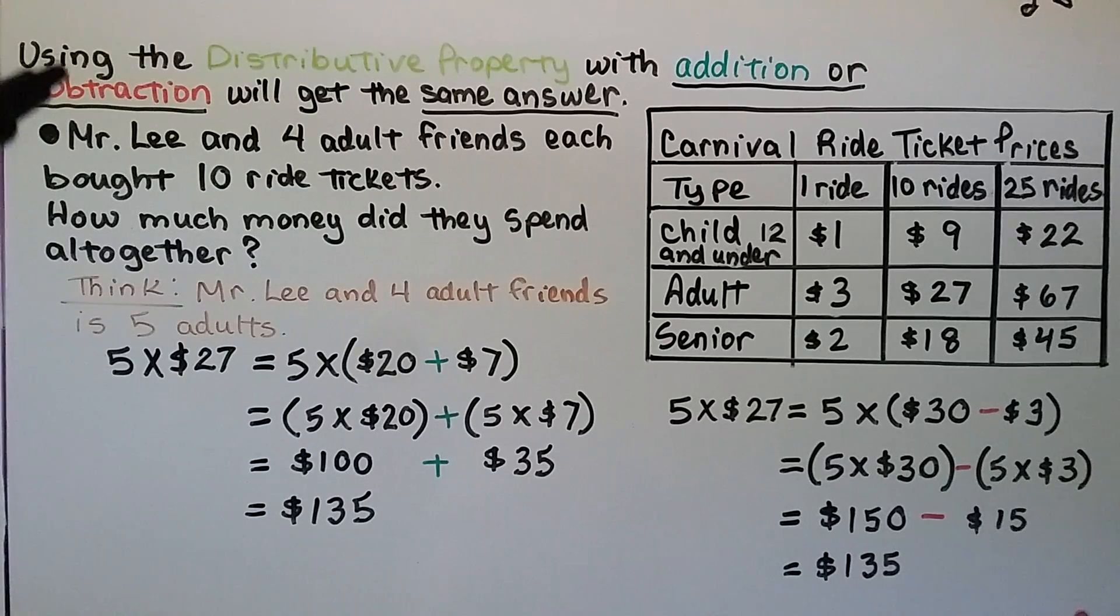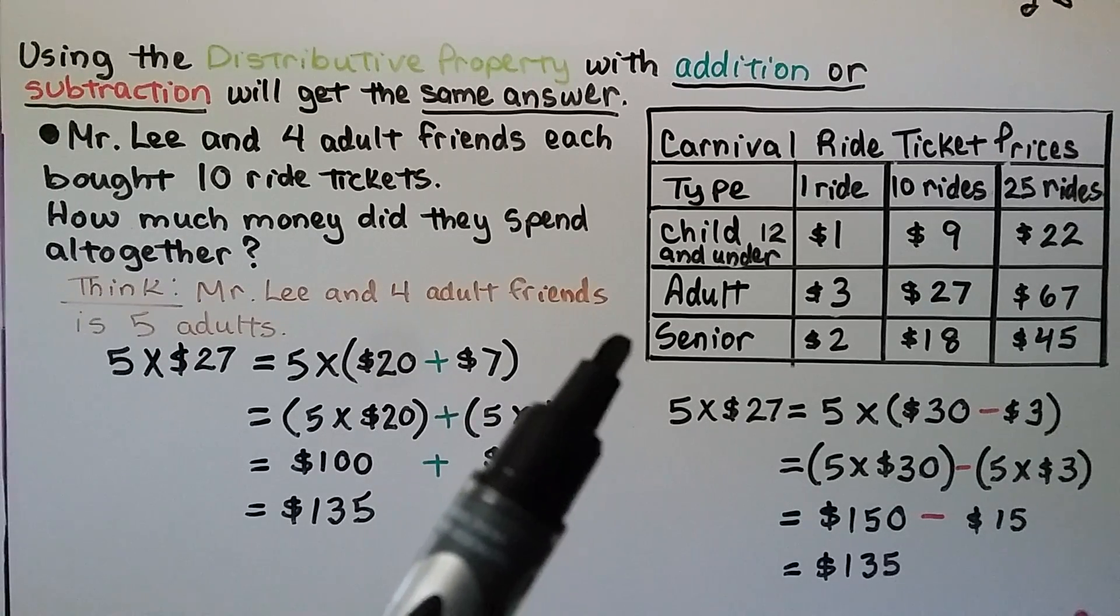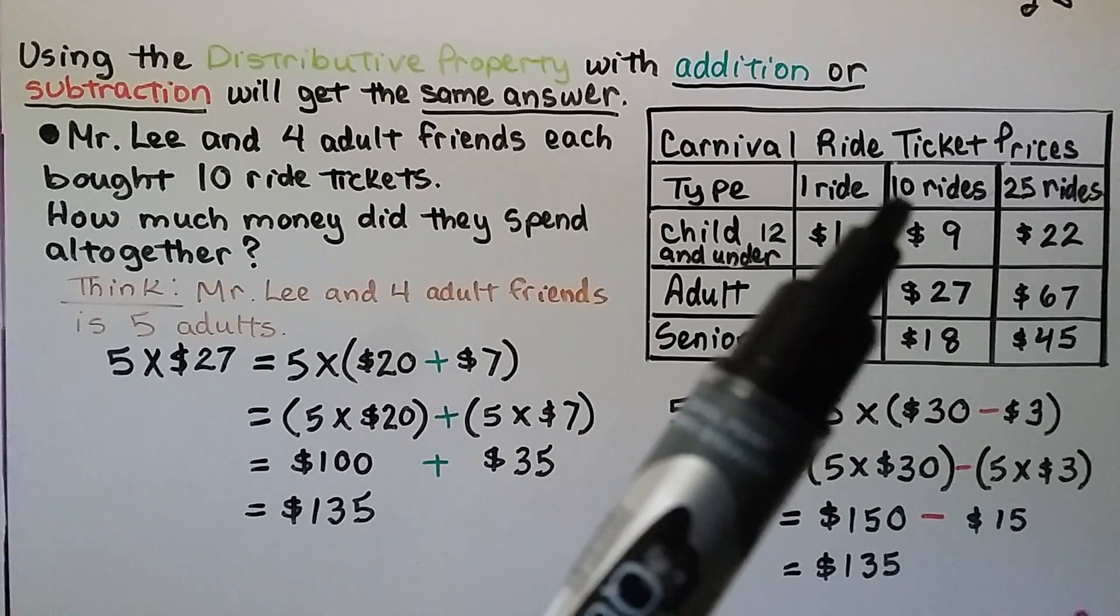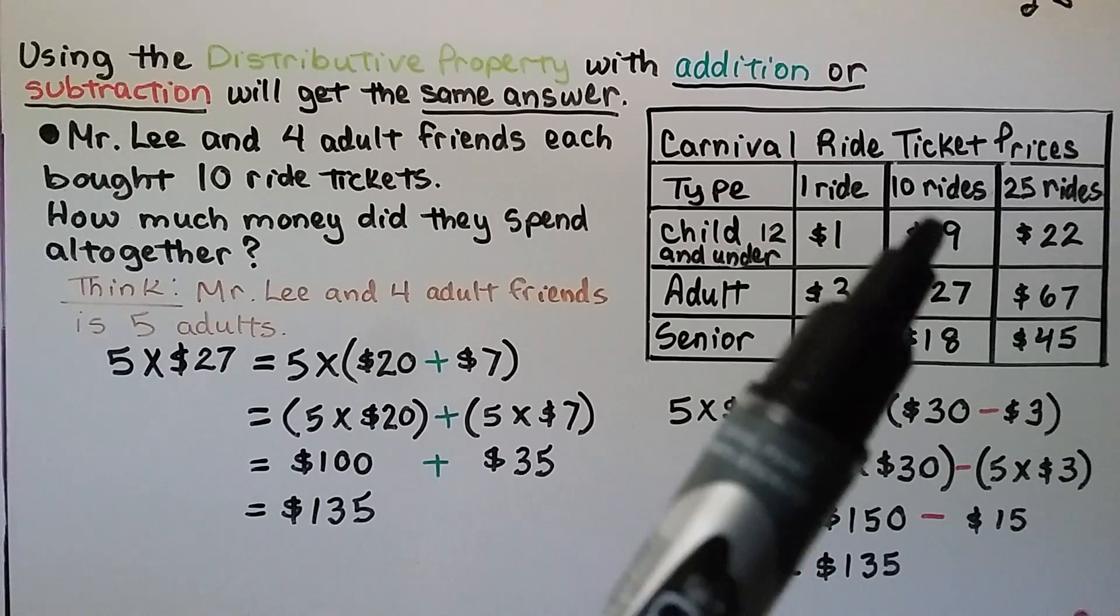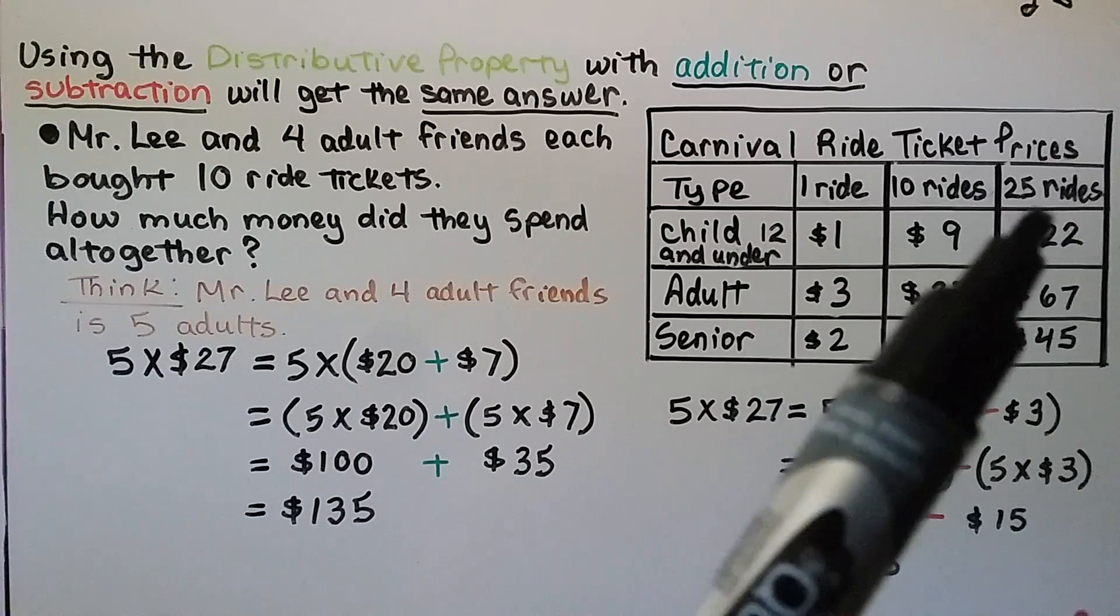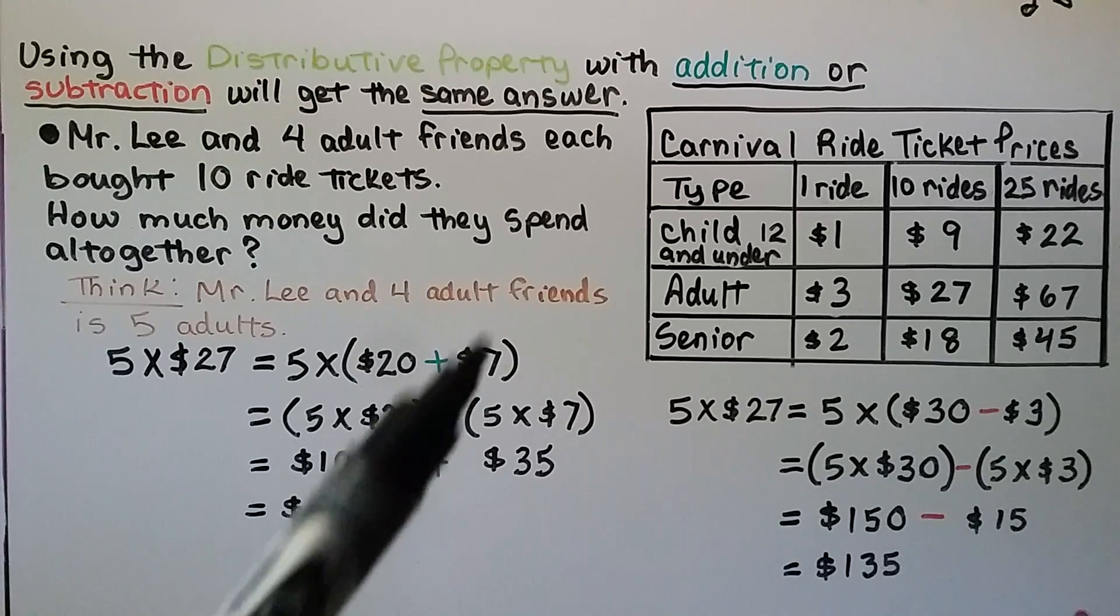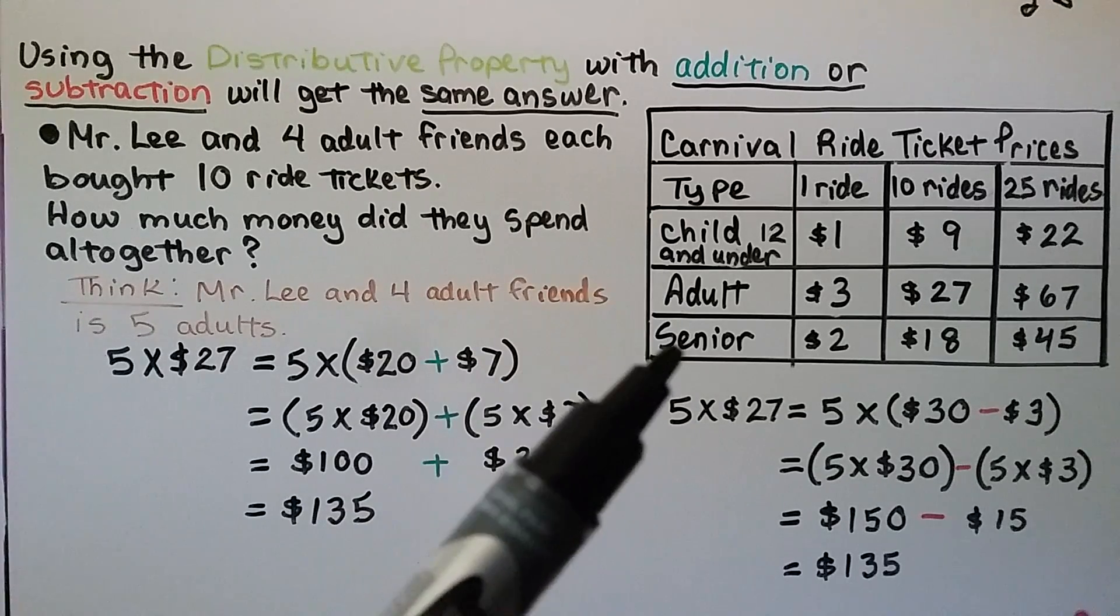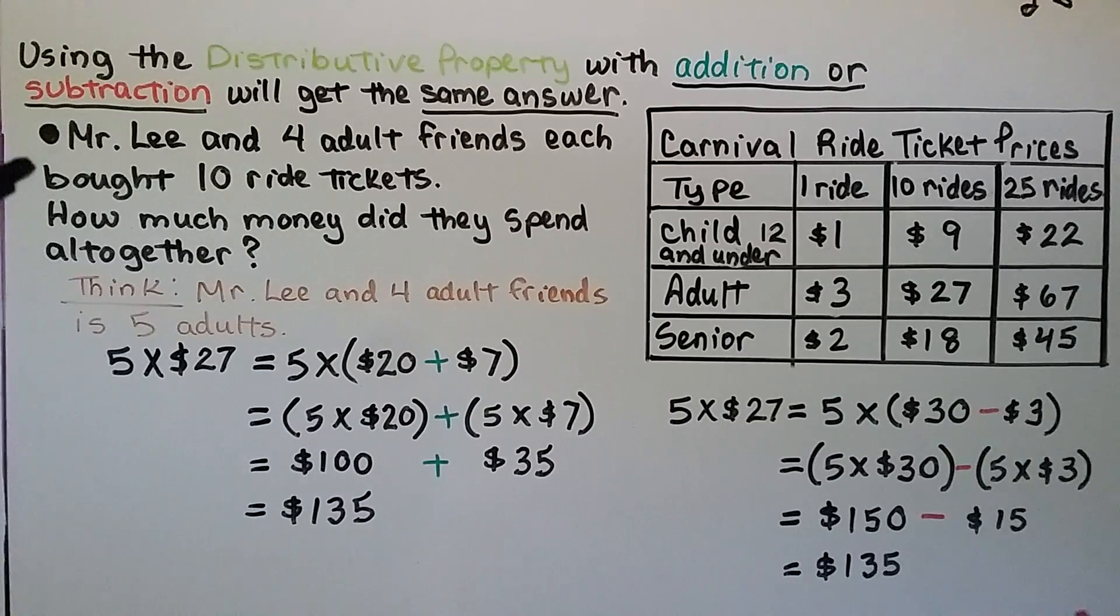Using the distributive property with addition or subtraction will get the same answer. Let's take a look at this table. It says carnival ride ticket prices. So you can buy 1 ride, you can buy 10 rides, it looks like you save some money, or 25 rides and you save even more money. And they've got tickets for child 12 and under, adult, and senior. Well, Mr. Lee and 4 adult friends each bought 10 ride tickets. How much money did they spend altogether?